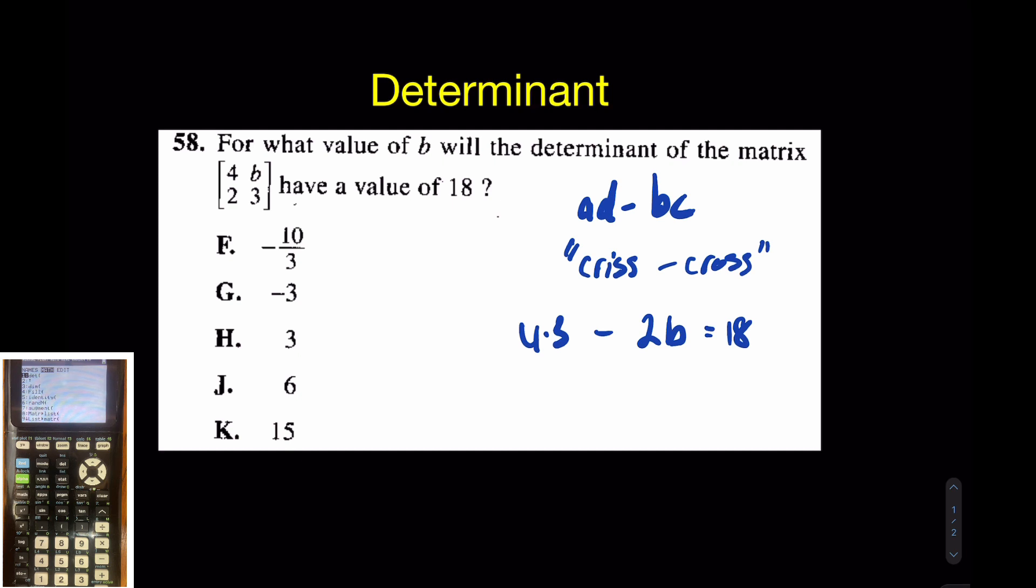D-E-T will take the determinant of whatever matrix you have. Of course, this one has a variable, so I'm not going to do this one using the calculator. And it's easy enough by hand. It's AD minus BC. So 4 times 3 minus 2 times B.